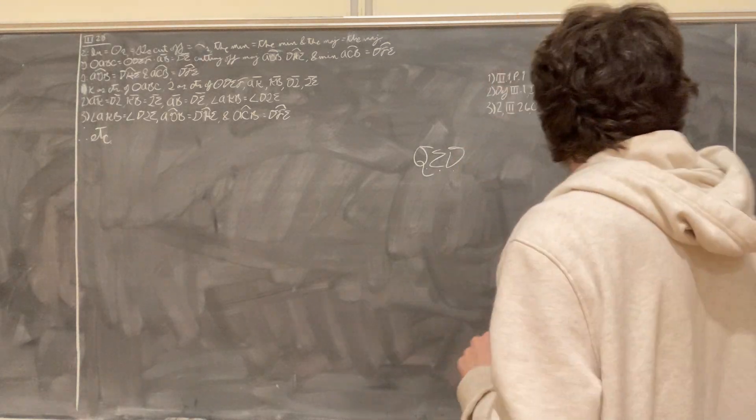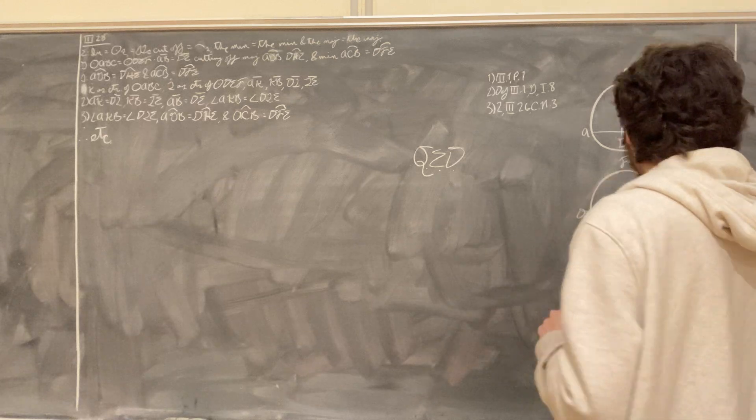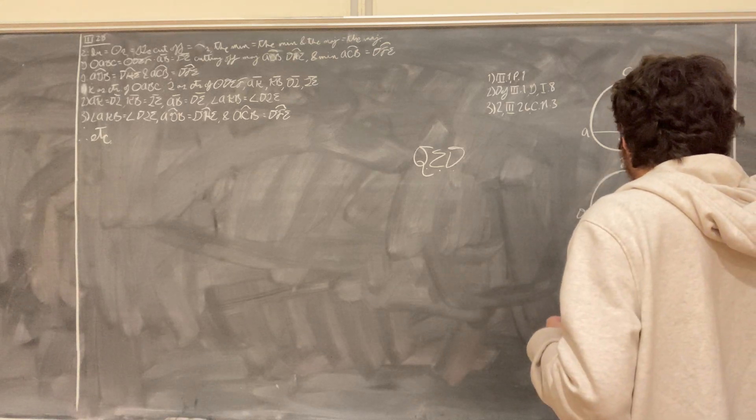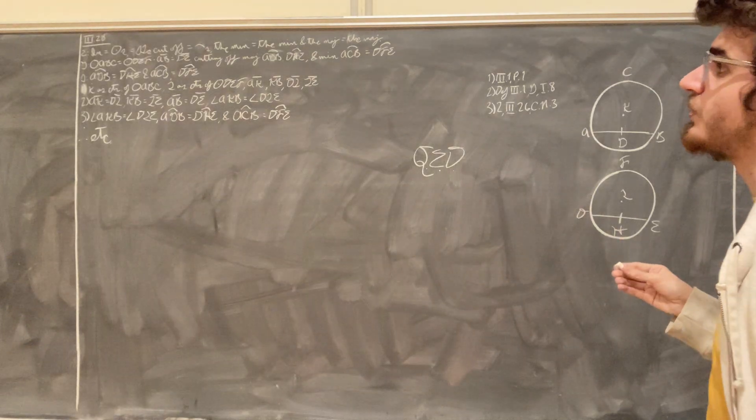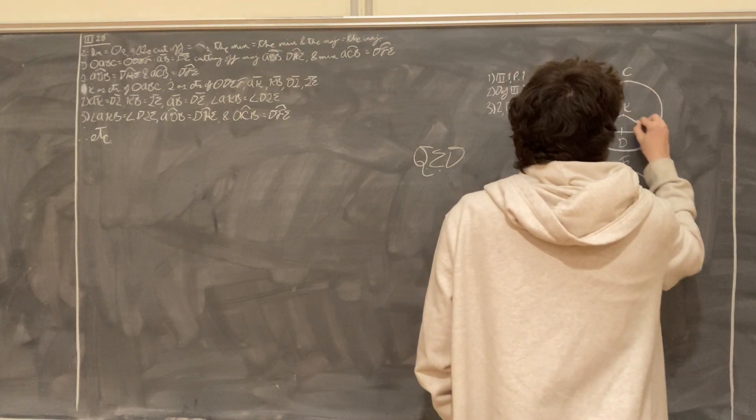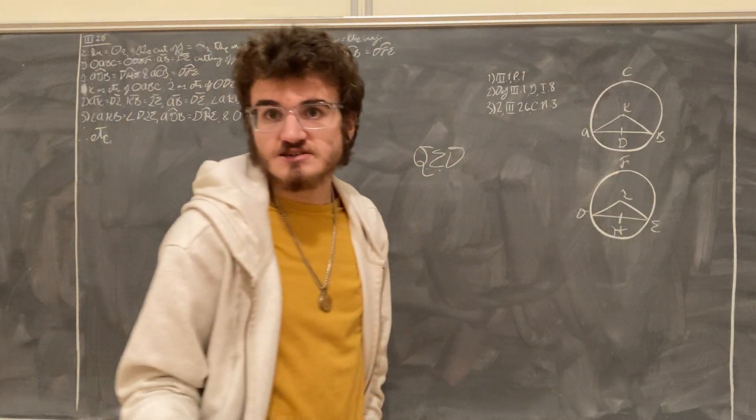We begin by finding the center of the circle ABC, and we call it point K, and we find the center of the circle DEF, and we call that point L. We do this by proposition 3-1, and we join these straight lines AK, KB, DL, and LE. That's postulate 1.